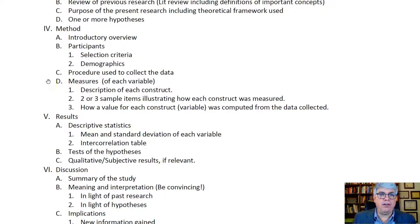And then, and this is the long part, you're going to talk about the measures of each variable. If you have a hypothesis involving three variables, you're going to describe each construct or variable. You'll give two or three sample items illustrating how each construct was measured and how a value for each construct was computed from the data collected. If you have three variables, you'll have three sections in the measures section. If you're measuring six variables, you'll have six sections. That way, the person knows how you operationalized the variable, the concept that you discussed in your literature review, and they would be able to reproduce your data.